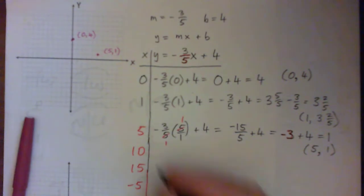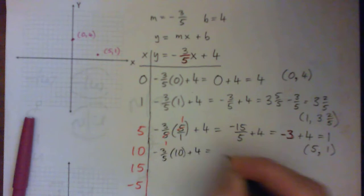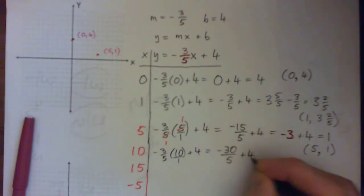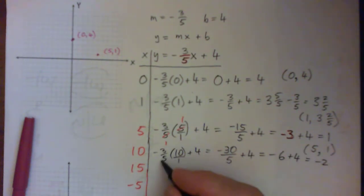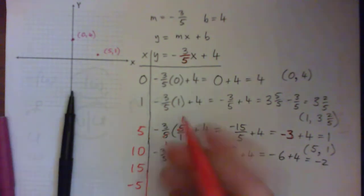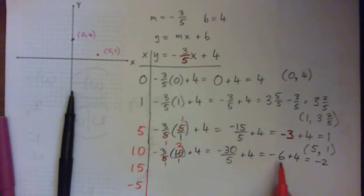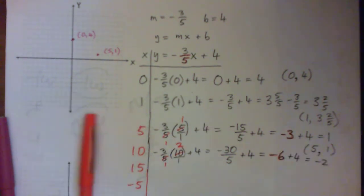Just to beat it to death, one more: -3/5 times 10 plus 4, which is -30 over 5 if you multiply it, but you should have simplified. That's -6 plus 4, which is -2. If we cross-canceled, 5 into 5 goes once, 5 into 10 goes twice, and -3 times 2 is -6. Either way, it should work out to -2.